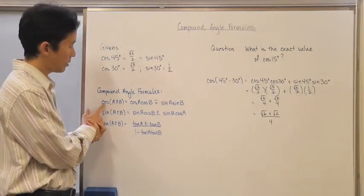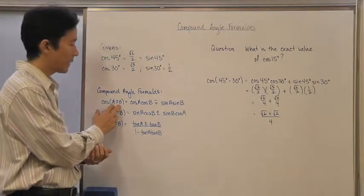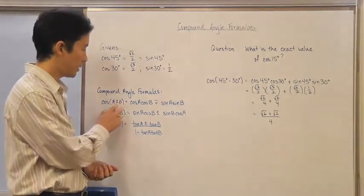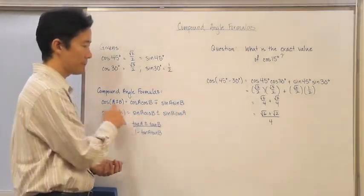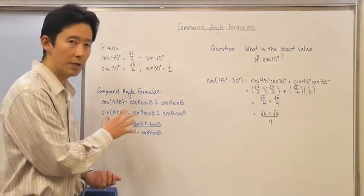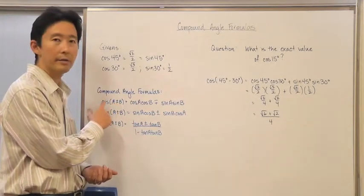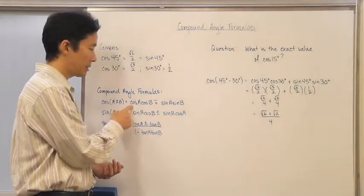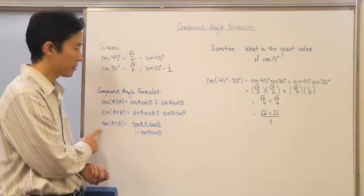The compound angle formula says: if you take the cosine of A plus or minus another angle B, you evaluate it using an expansion. Notice this is not the same as distribution — we're talking about the cosine of one angle plus or minus another angle. You evaluate it by using this particular compound angle formula. The same applies for sine and tangent as well.